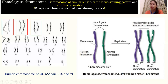What happens in meiosis after replication? In meiosis, after replication, there is a phenomenon of crossing over. Crossing over always happens between the two non-sister chromatids of homologous chromosomes. You should keep this fact in mind: crossing over always happens between non-sister chromatids of homologous chromosomes. This homologous chromosome gets replicated and gives rise to sister chromatids.